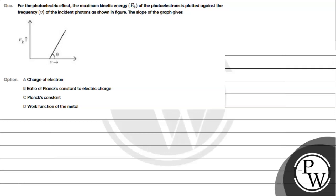Hello everyone, let's read the given question. The question says: For the photoelectric effect, the maximum kinetic energy Ek of the photoelectrons is plotted against the frequency ν of the incident photons as shown in figure. The slope of the graph gives: Option A - charge of electron, Option B - ratio of Planck constant to electric charge, Option C - Planck constant, Option D - work function of the metal.